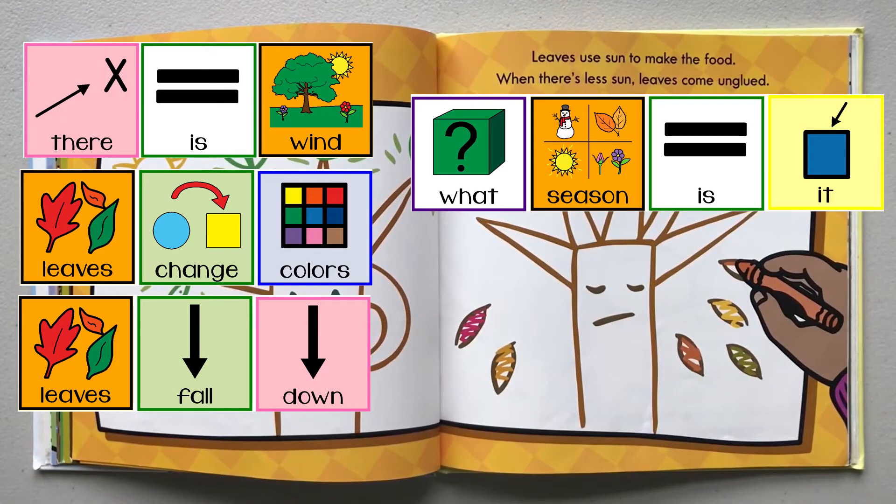There is wind. Leaves change colors. Leaves fall down. What season is it?